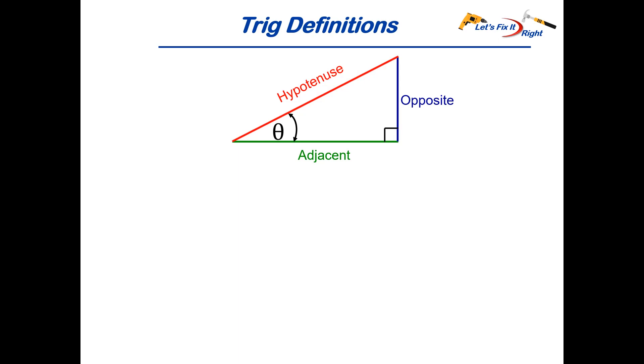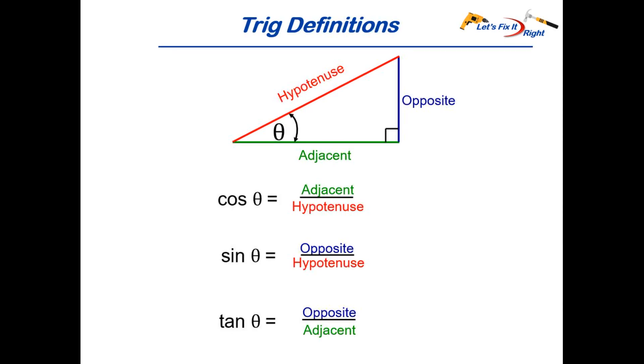This is a standard right triangle with its 90 degree angle on the right and variable angle theta on the left. The cosine of the angle theta is the length of its adjacent or green side divided by the length of the red hypotenuse. The sine is the opposite blue side also divided by the red hypotenuse and the tangent of theta is the length of the opposite blue side divided by the adjacent green side. In other words cosine is the adjacent side divided by the hypotenuse, sine is the opposite side divided by the hypotenuse and tangent is the opposite side divided by the adjacent side.